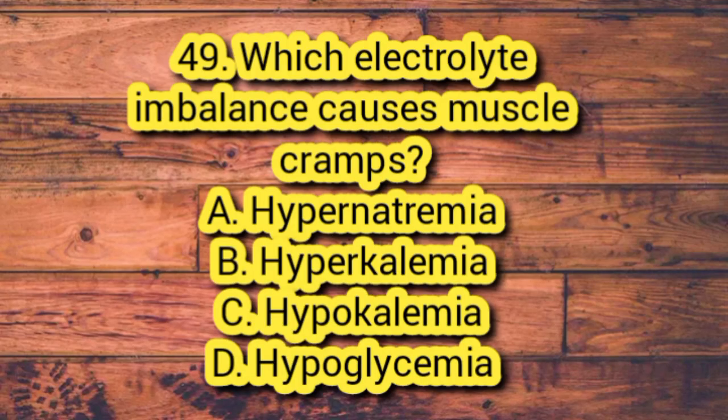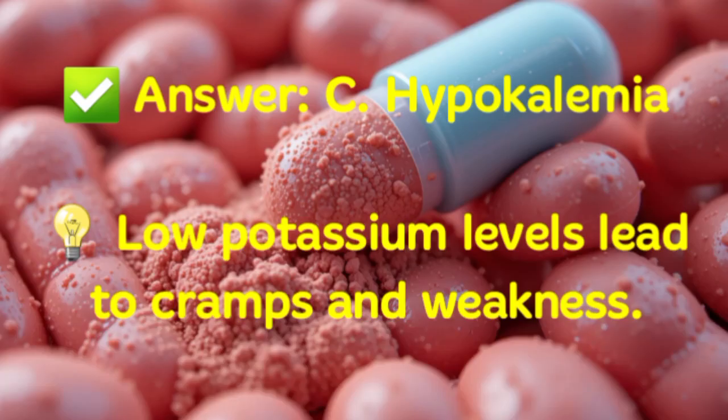Question 49. Which electrolyte imbalance causes muscle cramps? A. Hypernatremia. B. Hyperkalemia. C. Hypokalemia. D. Hypoglycemia. Answer: C. Hypokalemia. Low potassium levels lead to cramps and weakness.